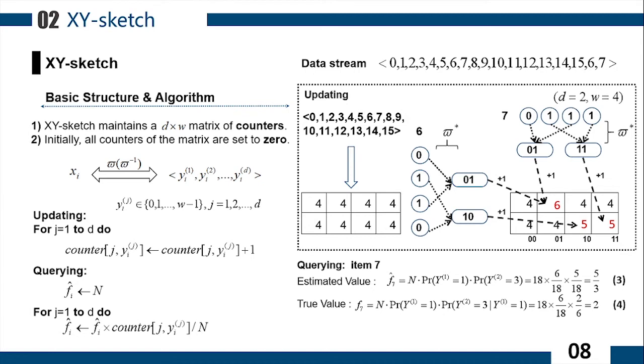When querying item 7, after decomposing it into the basic elements 1 and 3, the corresponding counters are found. Then, we can easily figure out the two key probability values 6/18 and 5/18. Finally, the estimated frequency of 7 can be calculated as 5 thirds by equation 3. The exact frequency of item 7 is 2, and it can be calculated by equation 4.